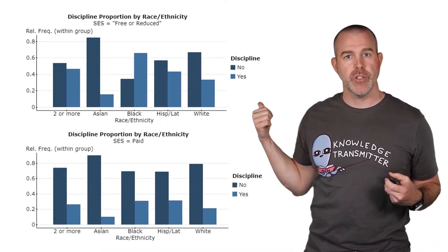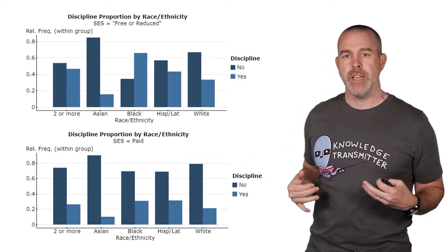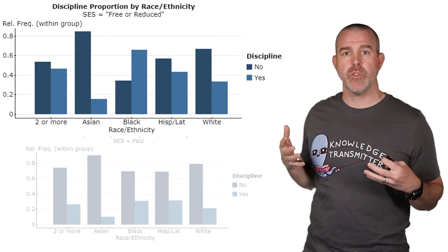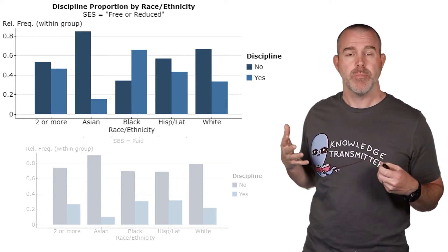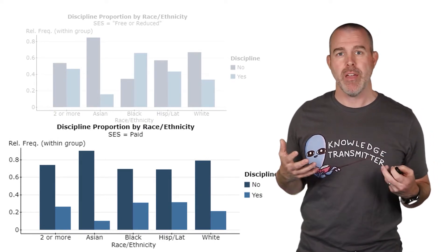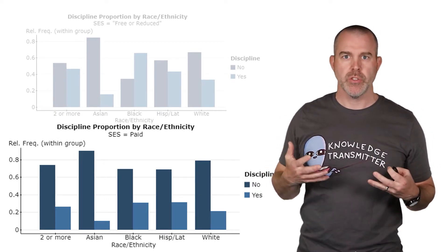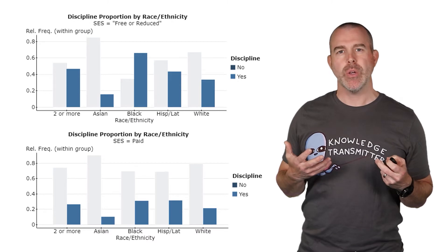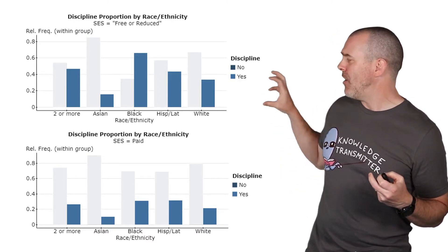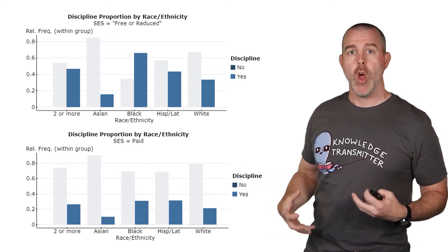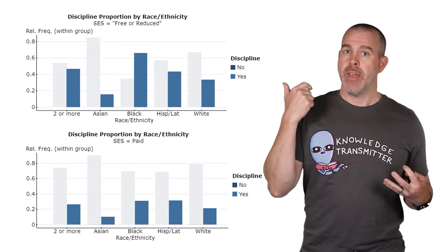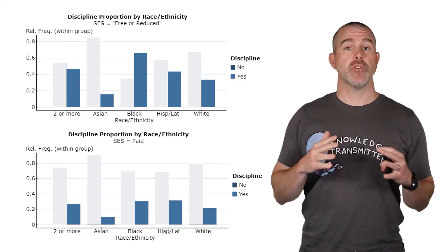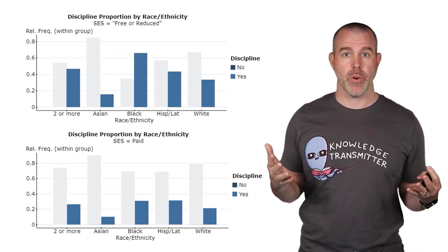Here it is. The top graph is free or reduced — the lower income students — and the bottom is paid. We can see that lower income students do have overall higher discipline rates compared to students who can pay for lunch, so they follow that trend of higher discipline rates. But if we focus just on the yes bars, we can see that regardless of whether it's free or reduced or paid, both groups — the Black and Hispanic/Latinx students — have higher discipline rates than their white and Asian counterparts. So socioeconomic status is not the reason for the discrepancy here.